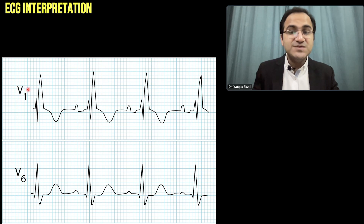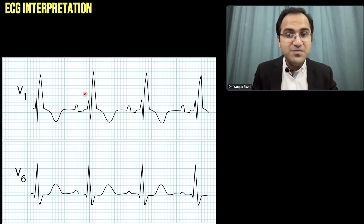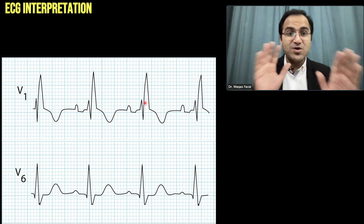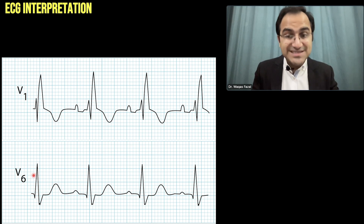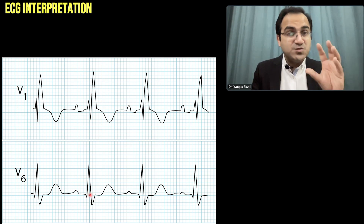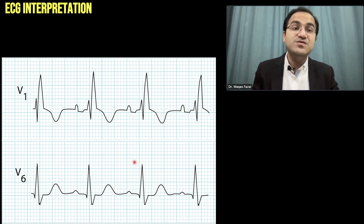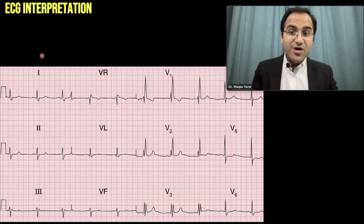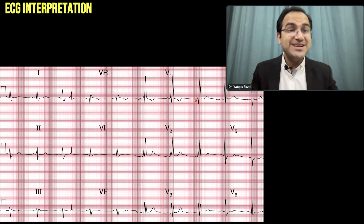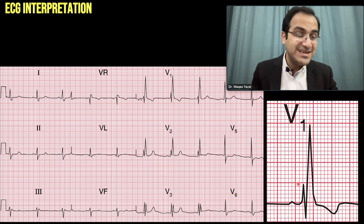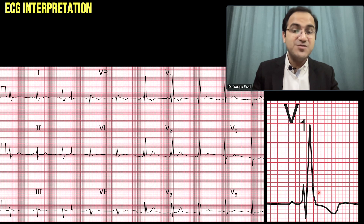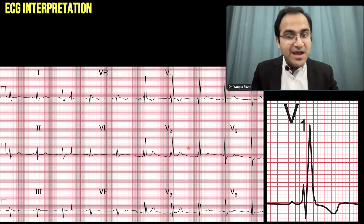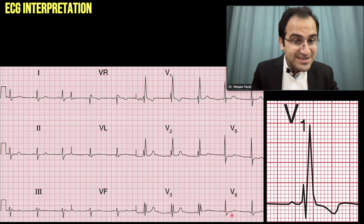In this ECG, if you look at V1 you can see the two QRS complexes — the M wave — due to separate depolarization of the left and right ventricle. In V6, you can see the deep, slurred S wave. Looking at another ECG, in V1 there are two QRS complexes forming the M wave, the rabbit ears, which you can also appreciate in V2 and V3. In V5 and V6, the slurring of the S wave is clearly visible.